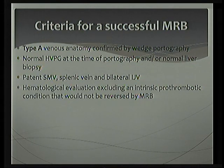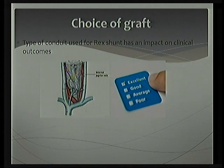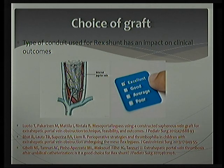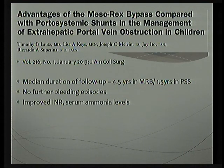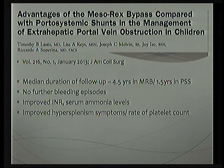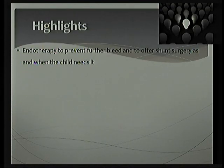You need a patent superior mesenteric vein, a splenic vein, and a patent bilateral internal jugular vein. Success also depends upon the child's weight being more than 8 kg. With all these factors considered, a success rate of more than 90% can be achieved. The internal jugular vein graft has stood the test of time and is recommended as the best graft for a rex shunt. A study evaluating differences in outcomes after portosystemic shunt surgery versus rex shunt showed that patients who underwent rex shunt had no further bleed episodes over 4.5 years, with improved INR, serum ammonia levels, and growth parameters.